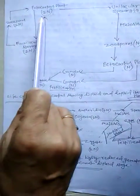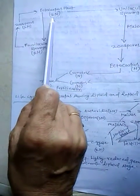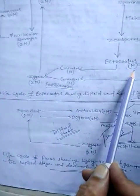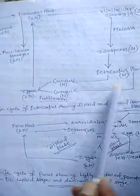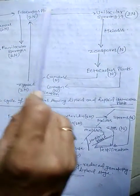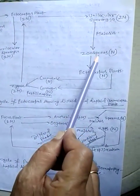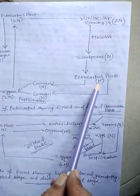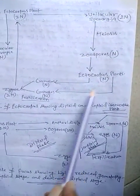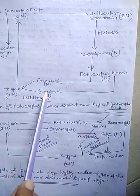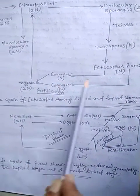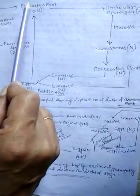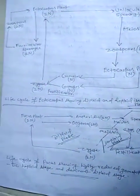Some plants are diploid while others are haploid. The diploid plants reproduce by formation of zoospores, and the haploid plants reproduce by formation of gametes — this is the sporophytic and gametophytic generation respectively.